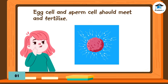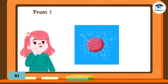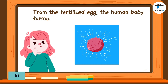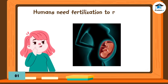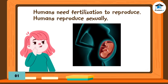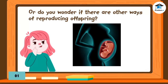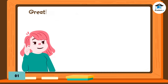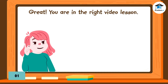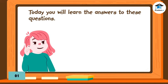Can you recall how humans reproduce? The egg cell from females and sperm cell from males should meet and fertilize. From the fertilized egg, the human baby forms. Since humans need fertilization to reproduce, humans reproduce sexually. Have you ever wondered if there are other living things that also reproduce sexually, or if there are other ways of reproducing offspring? You are in the right video lesson — today you will learn the answers to these questions.